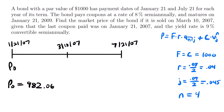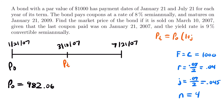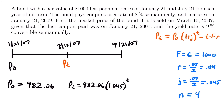Now we use this value to calculate the market price of this bond on March 10th, 2007. We want to calculate P sub t. The formula says P sub t equals P sub 0 times (1 plus yield rate j) to the power of t, minus t times the face value times the coupon rate. So P sub t equals 982.06 times (1.045)^t minus t times 1,000 times 0.04, which simplifies to 982.06 times (1.045)^t minus 40t.